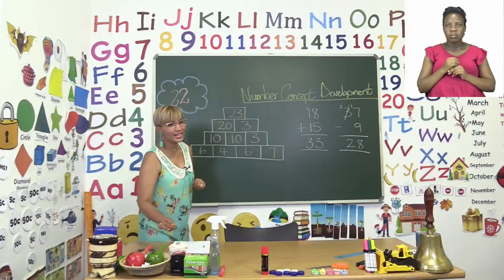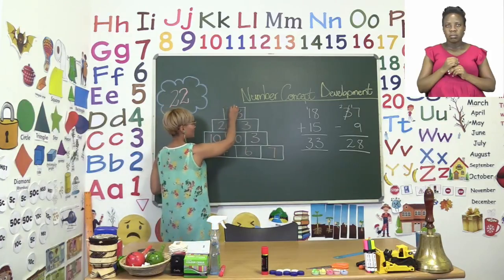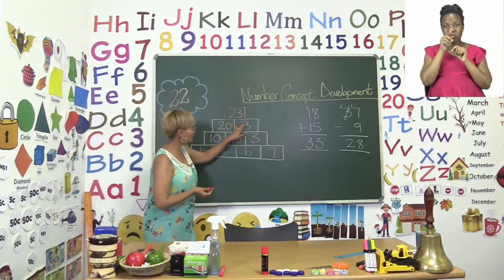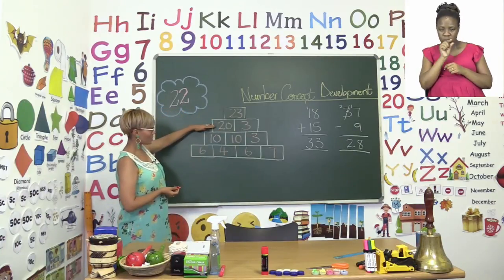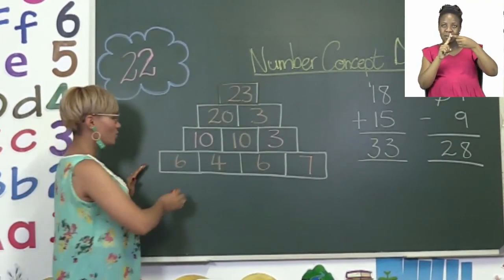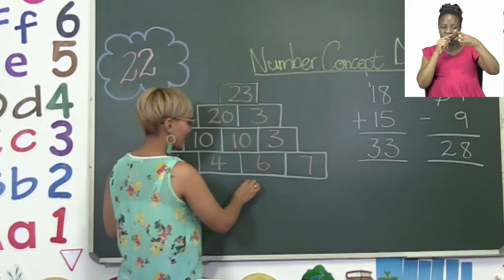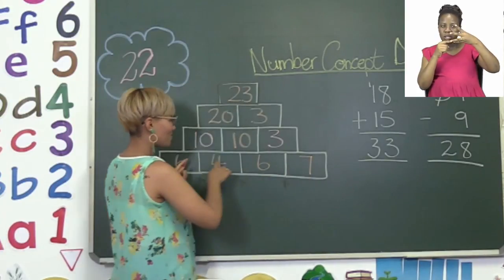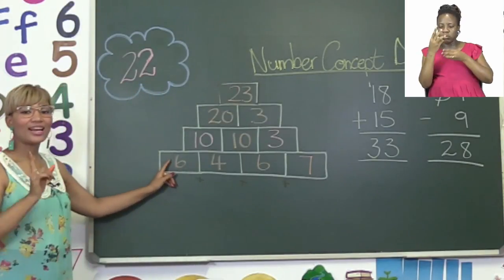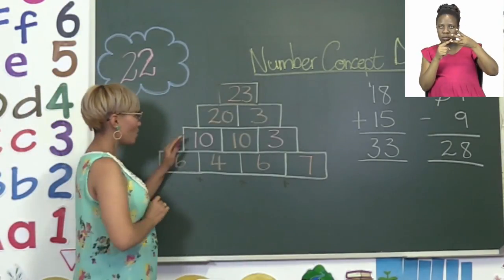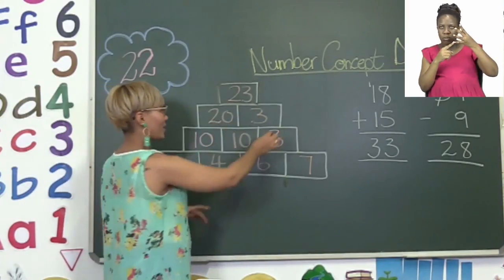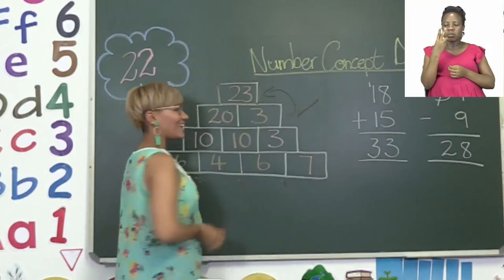Now remember everyone we said that this number in the top block is your answer. So all these numbers in this row, the numbers in this row and the numbers in this row, if you add them all together then they must all be equal to 23. Now let's see if that is the case. We said 20 plus 3. Is 20 plus 3 equal to 23? Yes it is.